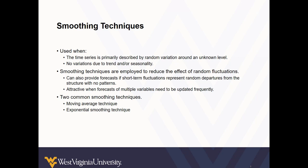Simple smoothing techniques are ideal when the time series is primarily described by random variation around an unknown level and there are no variations due to trend or seasonality. These techniques help reduce the effect of random fluctuations. Two examples of smoothing techniques are the moving average and the exponential smoothing technique.